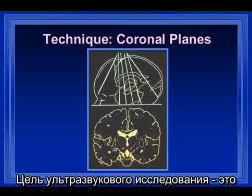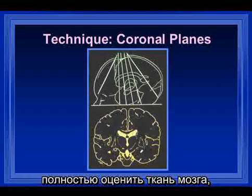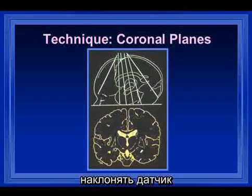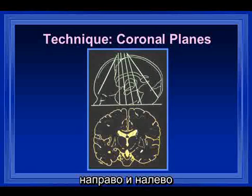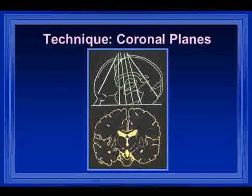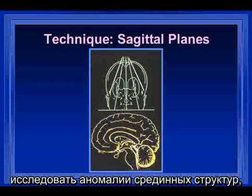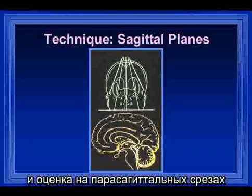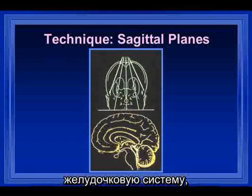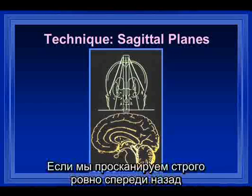The goal of the sonogram is to image as much of the brain as needed for a complete evaluation, which implies that we will at times oblique the transducer to the right and to the left to see over the convexities of the brain. The object of the sagittal plane is to examine the midline structures for anomalies and to evaluate in a parasagittal plane the ventricular system as well as the parenchyma of the brain.